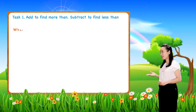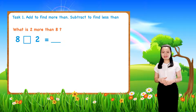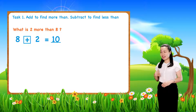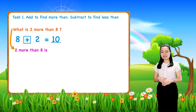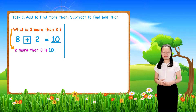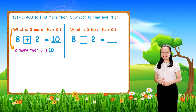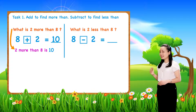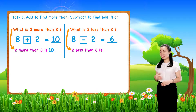Next, what is two more than eight? Eight plus two equals ten. Next, what is two less than eight? We subtract eight minus two equals six. So, two less than eight is six.